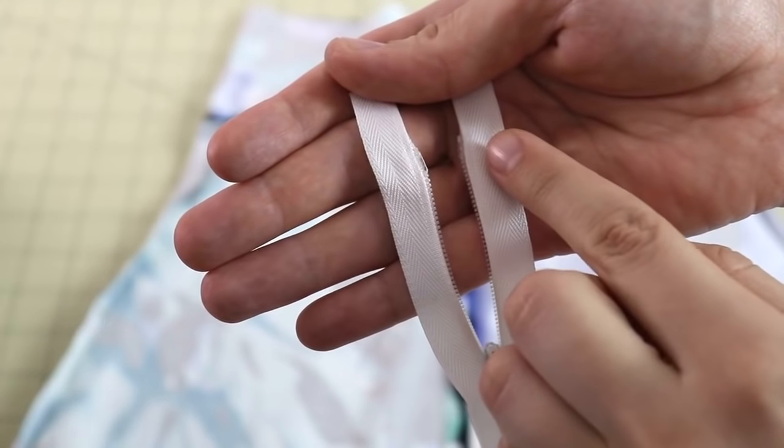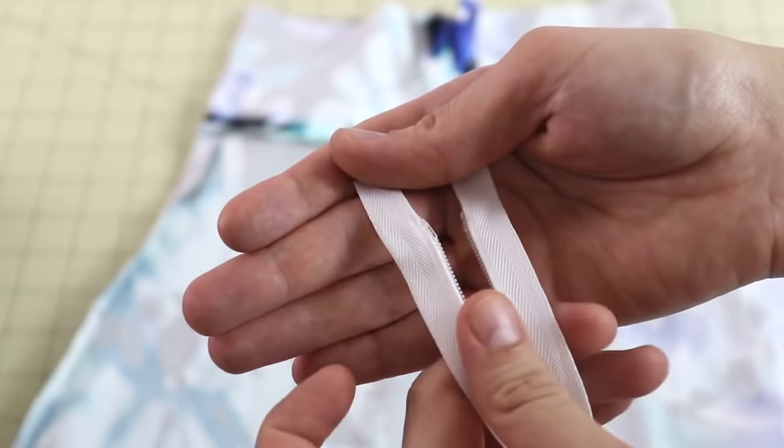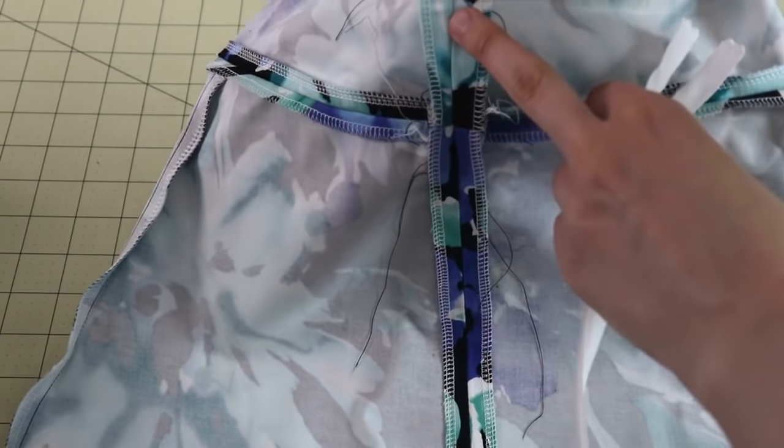Now what you want is these top little stoppers of the zipper to match the crease of the waistband right over here.